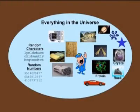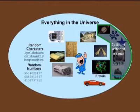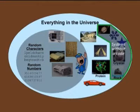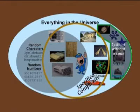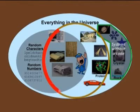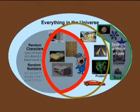Now let me come to my definition of information. We see here a complete universe. You see systems without code — for example, stars, snowflakes, and crystals. You see random characters, which are also outside of the definition domain. And you see here proteins and cars and so on — we say that it's specified complexity, but it's not information. The red field — that's my definition of information.